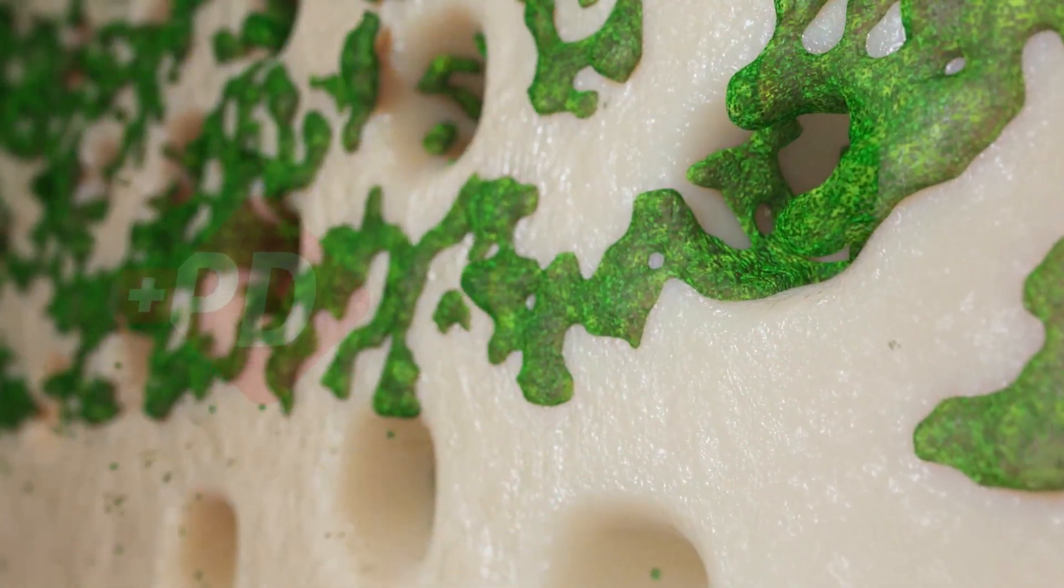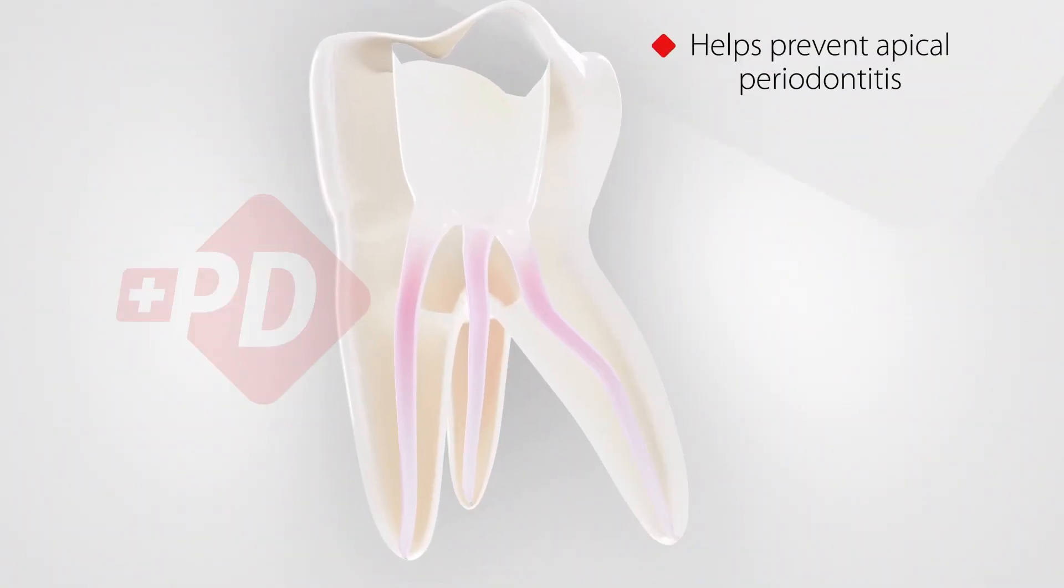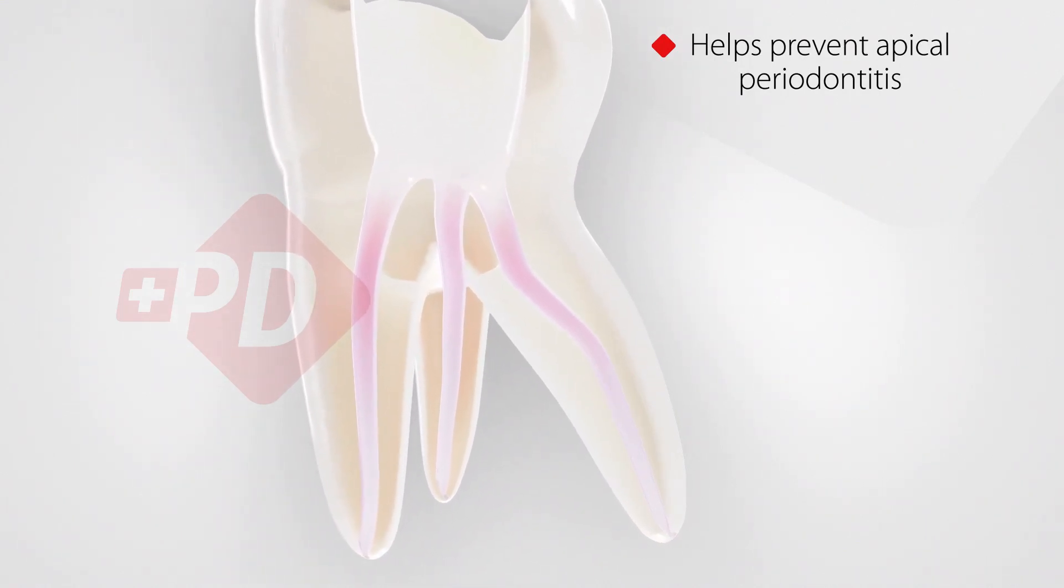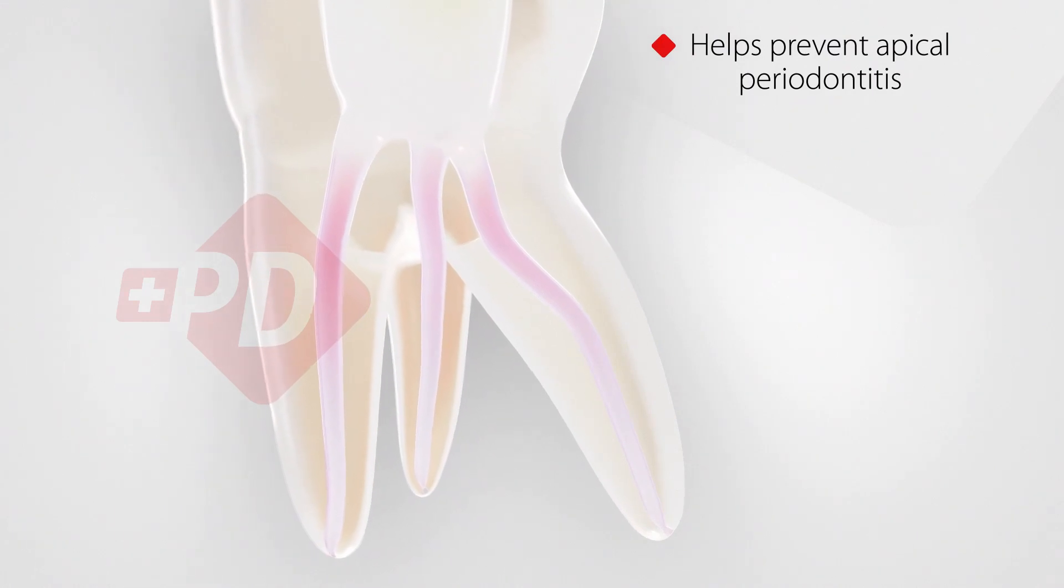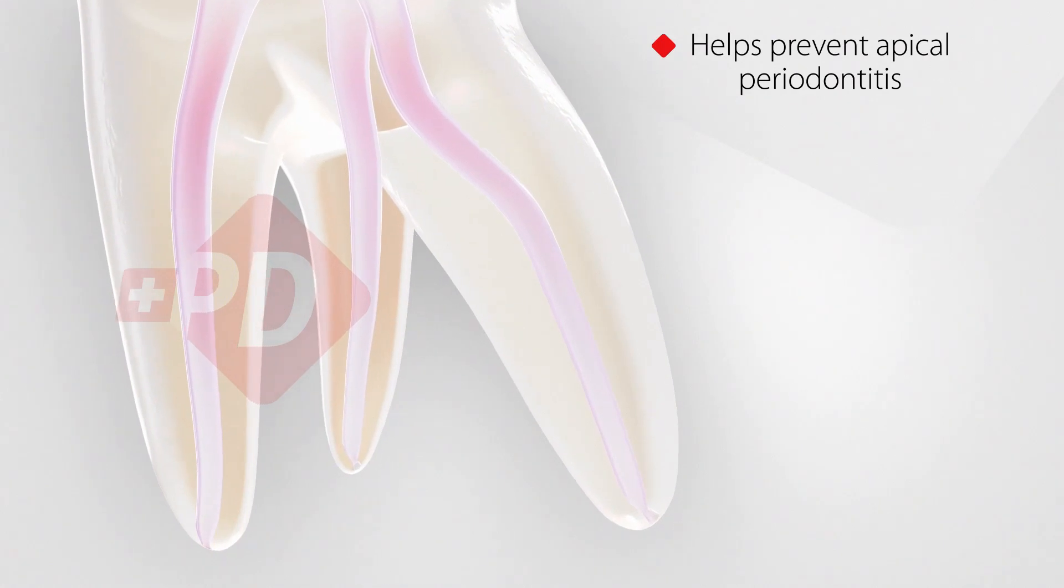In addition, the powerful horizontal flow provides high levels of shear stress directly onto the root canal wall, so even the smear plugs inside the dentinal tubules are washed out. AIRIFLEX enhances cleaning and irrigation for an improved removal of residues such as debris, smear layer and biofilm.